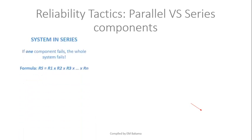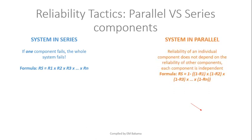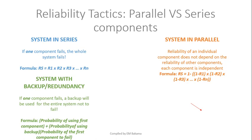In a series system, if one component fails the whole system fails. The reliability formula is: multiply the individual reliabilities R1 × R2 × R3 to get the total system reliability. In a parallel system, the reliability of one component does not depend on others — component one may fail while the rest still work — and there is a separate formula for this. There is also a mixed system combining series and parallel, which is essentially a system with built-in backups: main components operate normally, and if they fail, a backup takes over.